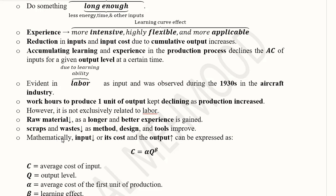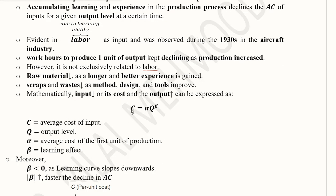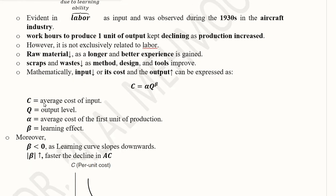Mathematically, the inputs or costs of inputs decline when output increases. This relationship is expressed as: C = α · Q^β, where C is the average cost, Q is the output level, α is the average cost of the first unit of production, and β is the power of Q.